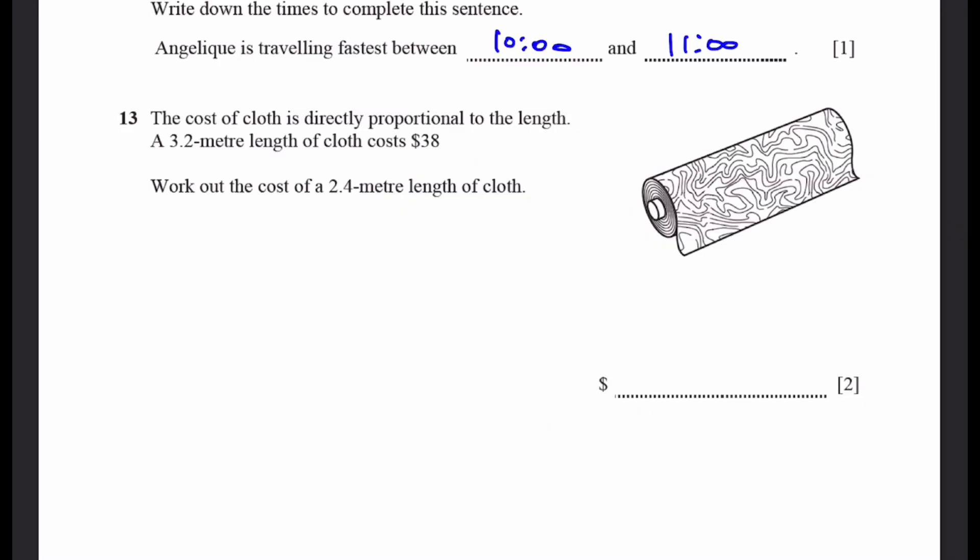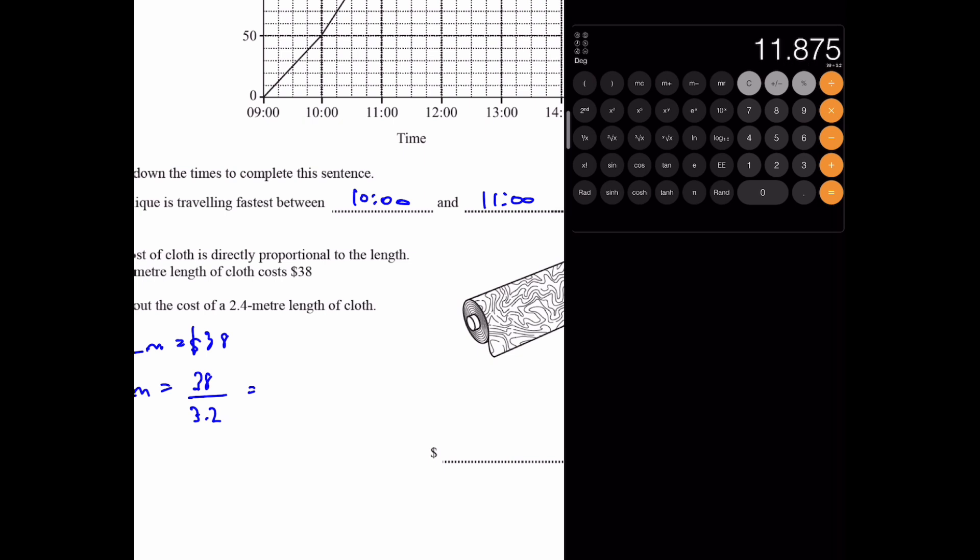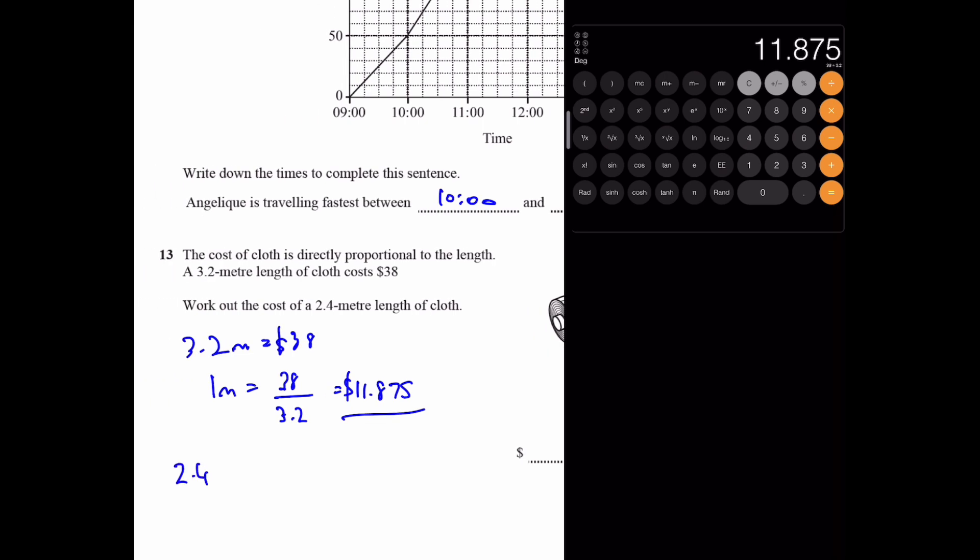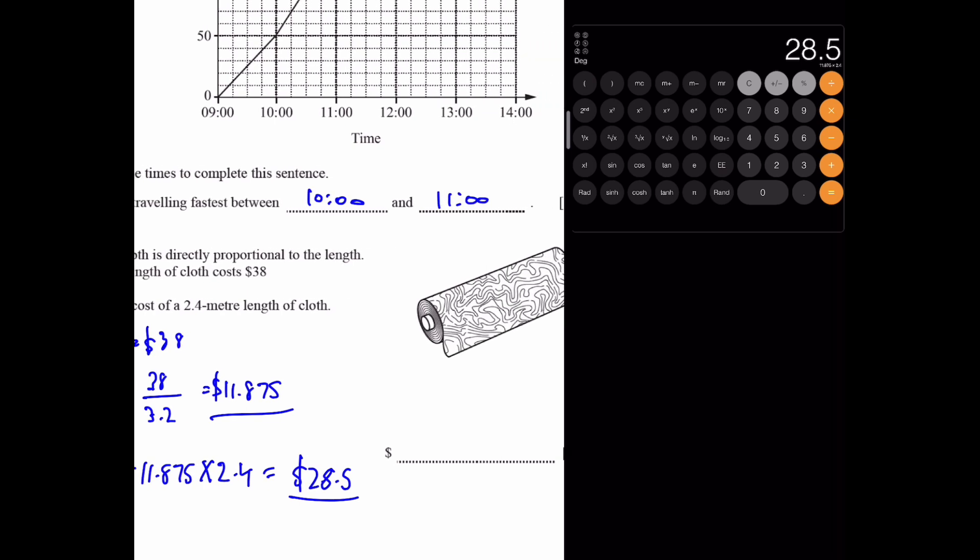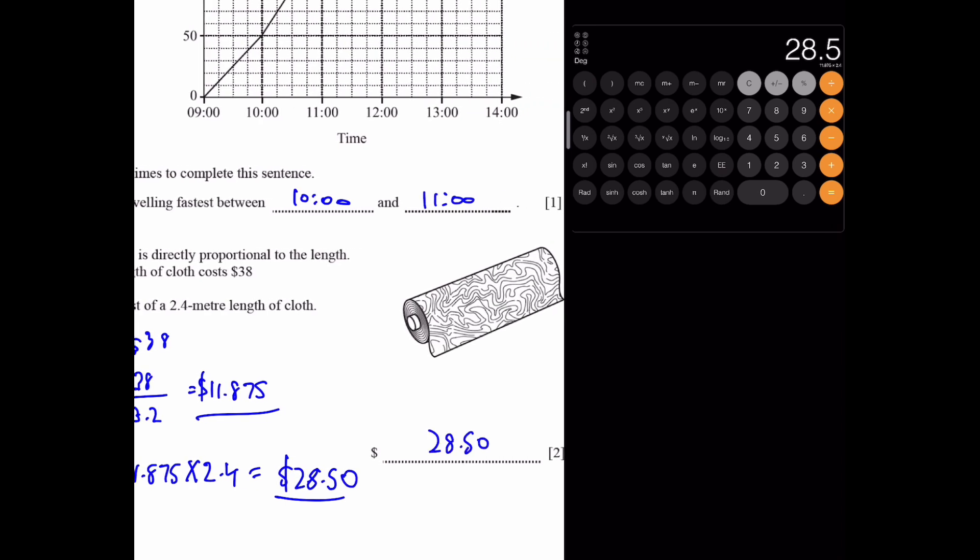Question 13. The cost of cloth is directly proportional to the length. A 3.2 meter length of cloth costs $38. Work out the cost of a 2.4 meter length of cloth. So 3.2 meters equals $38. That means 1 meter equals 38 by 3.2. We're going to calculate that out. 38 divided by 3.2, which equals $11.875. And now, we need 2.4 meters. So, we multiply that by 2.4. And when we do that, we get the answer as $28.50.